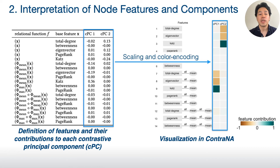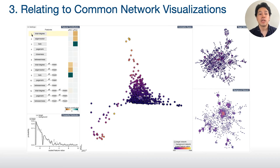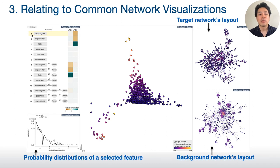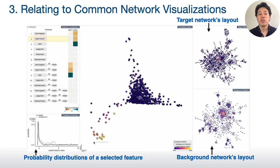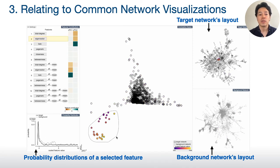Lastly, in addition to the visualizations I have explained, CONTRANA provides commonly used network visualizations, including probability distributions and node link diagrams of target and background networks. By visually linking all the views, we can effectively relate the learned results to familiar visualizations to understand the result with the context of network structures.